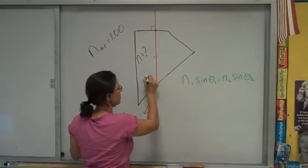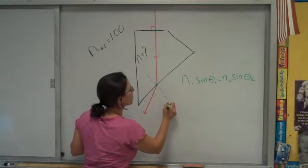So I'm going to estimate, use the protractor, I'll just estimate 90 degrees to that boundary. That's the normal line.